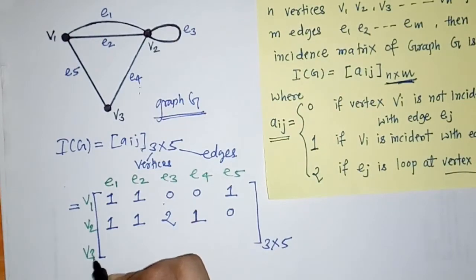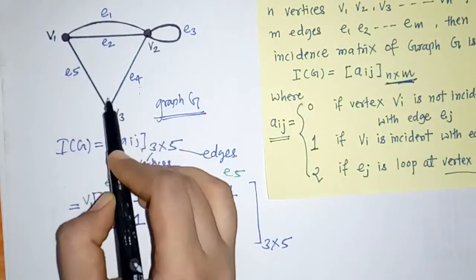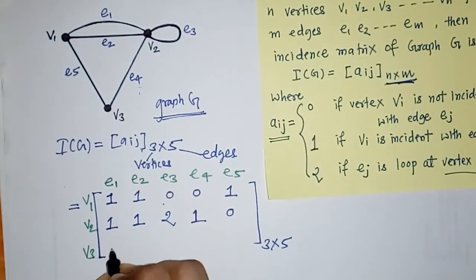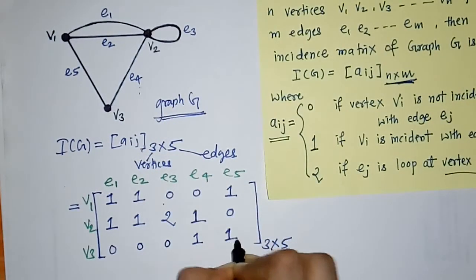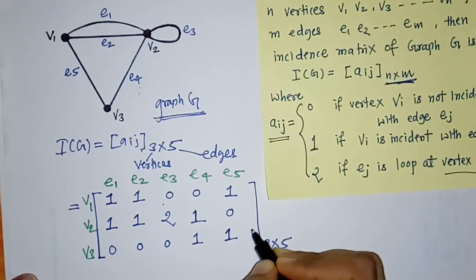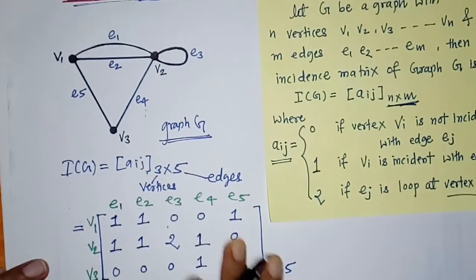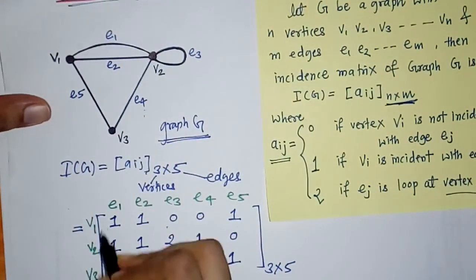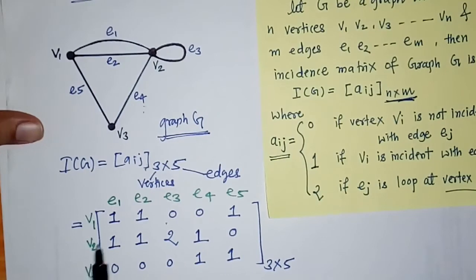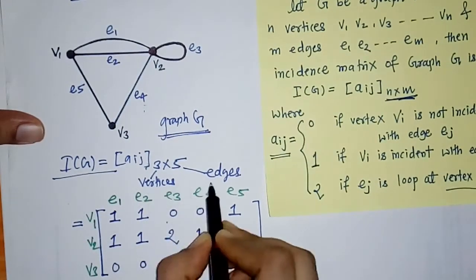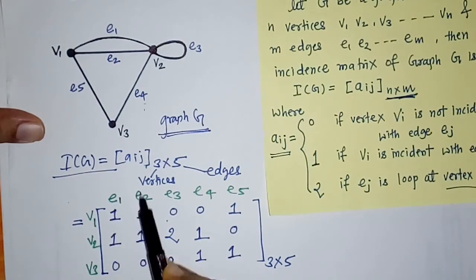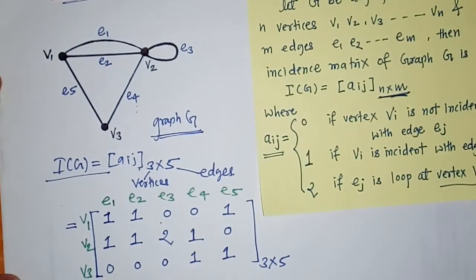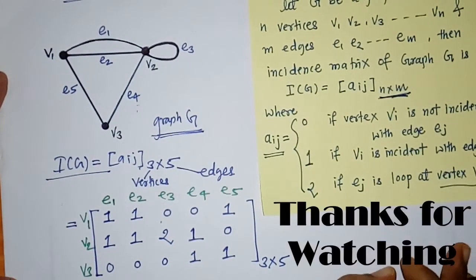Now we check vertex v3. V3 is incident on e5 and e4; the others are 0. So for e4 and e5 we write 1 and 1. This is the incidence matrix for this graph. Remember that the incidence matrix relates vertices to edges — the vertices are written in the rows and the edges are in the columns. So this is the required incidence matrix for this graph.